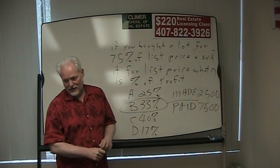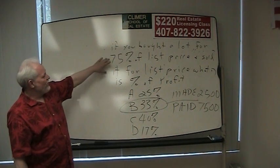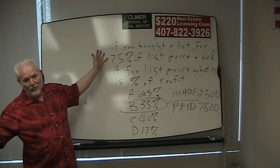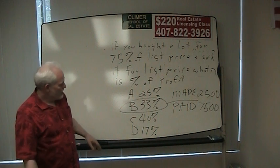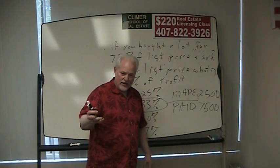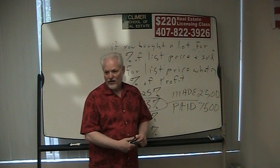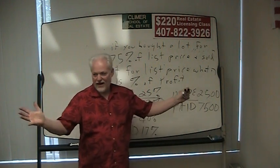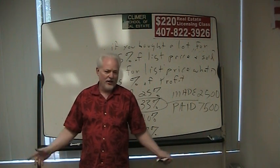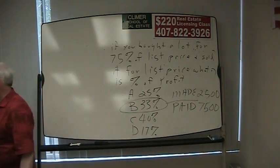You bought the lot for 75% of the list price, you sold it for the list price. We just made up a price — $10,000. So we bought it for $7,500, we made $2,500. Put that in the calculator, that's a 33% profit. Everybody with me? What you made over what you paid — it's so simple. Just what you made over what you paid.